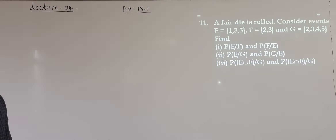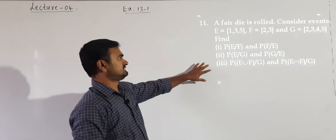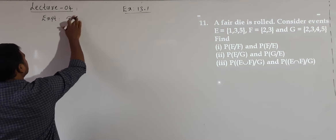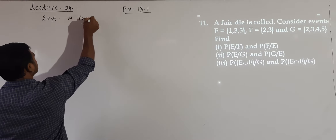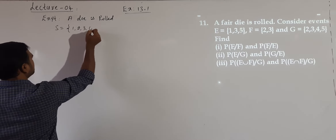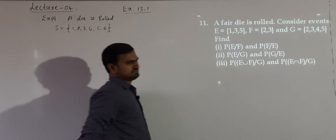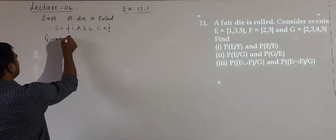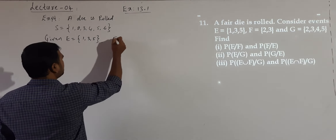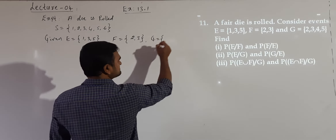Let us see the next question. A fair die is rolled. Consider the events E, F, G, and find these three quantities. The experiment is rolling a single die, so the sample space is {1, 2, 3, 4, 5, 6}. The events are given: E = {1, 3, 5}, F = {2, 3}, and G = {2, 3, 4, 5}.